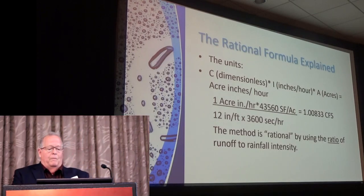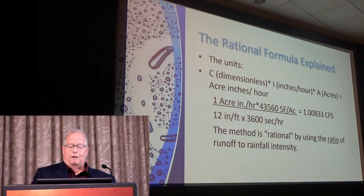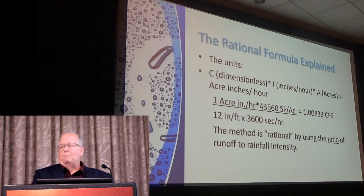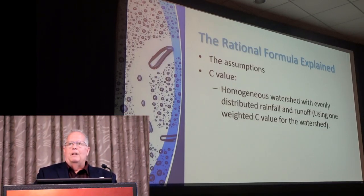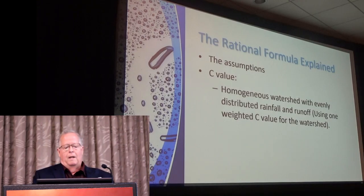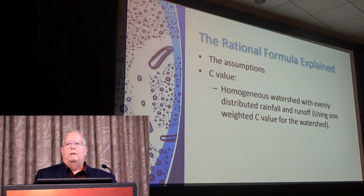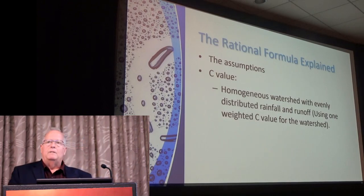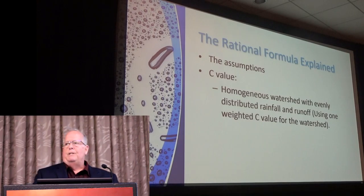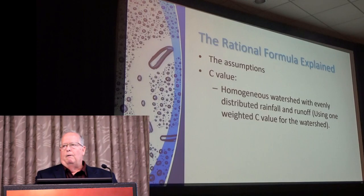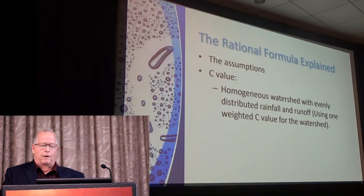Regarding the assumptions: the C value essentially requires you to come up with one drainage area, one rainfall-runoff curve, weighted based on area. It assumes a homogeneous watershed with evenly distributed rainfall and runoff over the watershed, and you have one C value for the entire watershed.